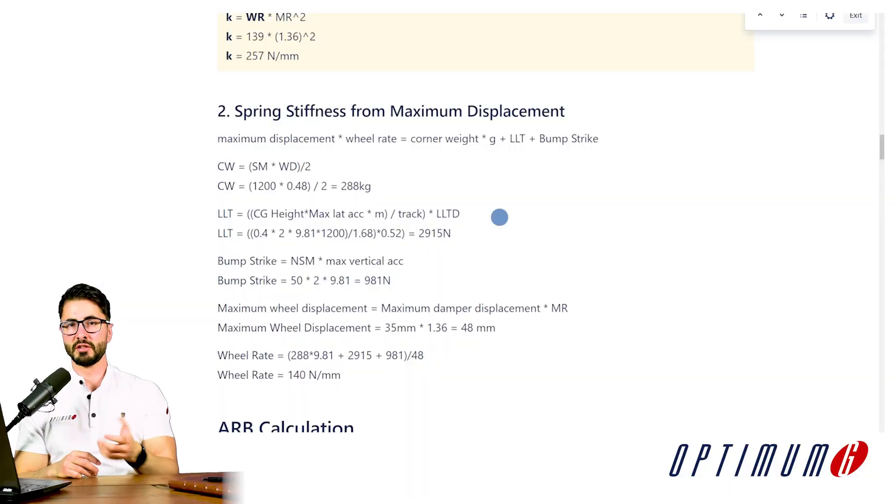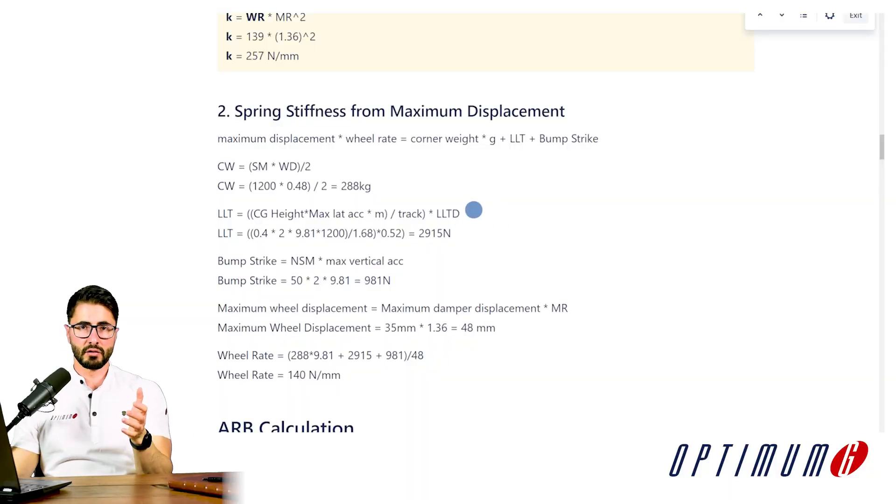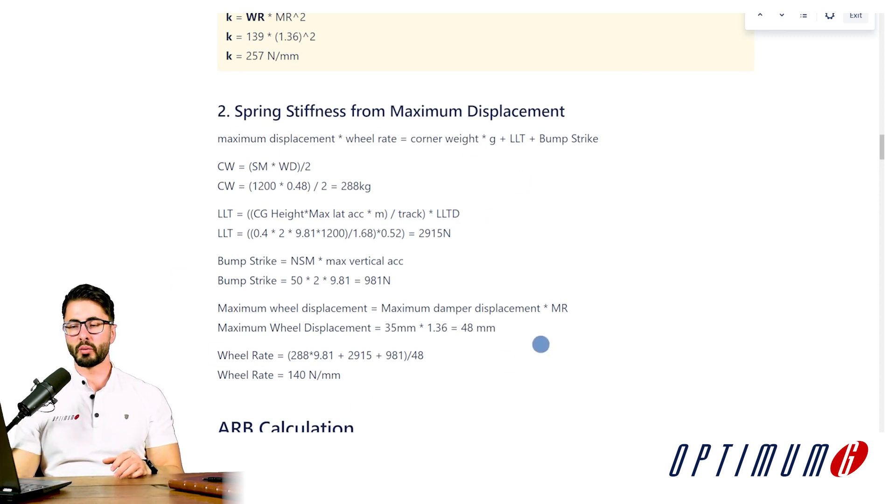In summary, if we use a spring of 257 N/mm in this suspension with a given motion ratio, we are going to get to the natural frequency of 3.5 Hz that was our initial target. Done — we have the springs defined. Another approach is to look at the maximum displacement you would like to see on the suspension or on the damper. In the critical case — lots of load transfer with braking, cornering, and hitting a curb — you can calculate the spring stiffness needed to keep movement under control.